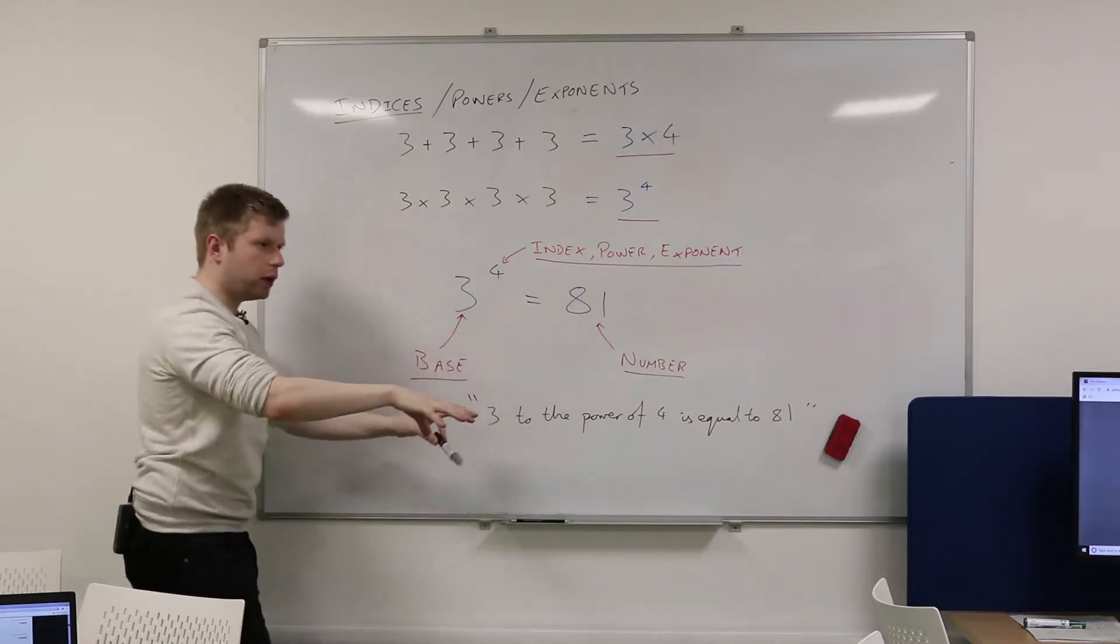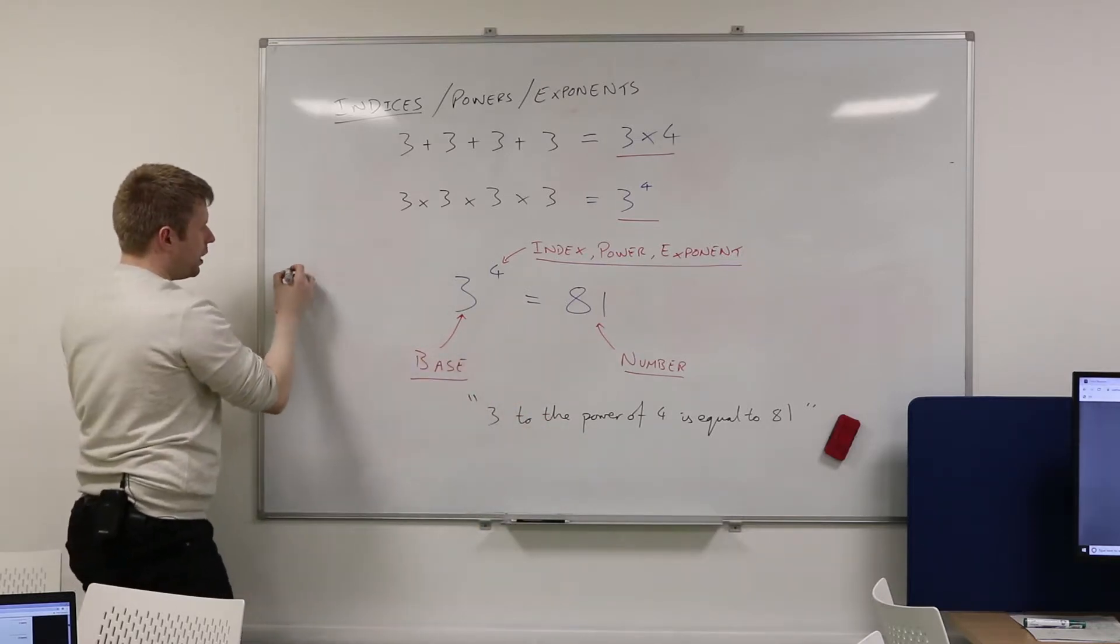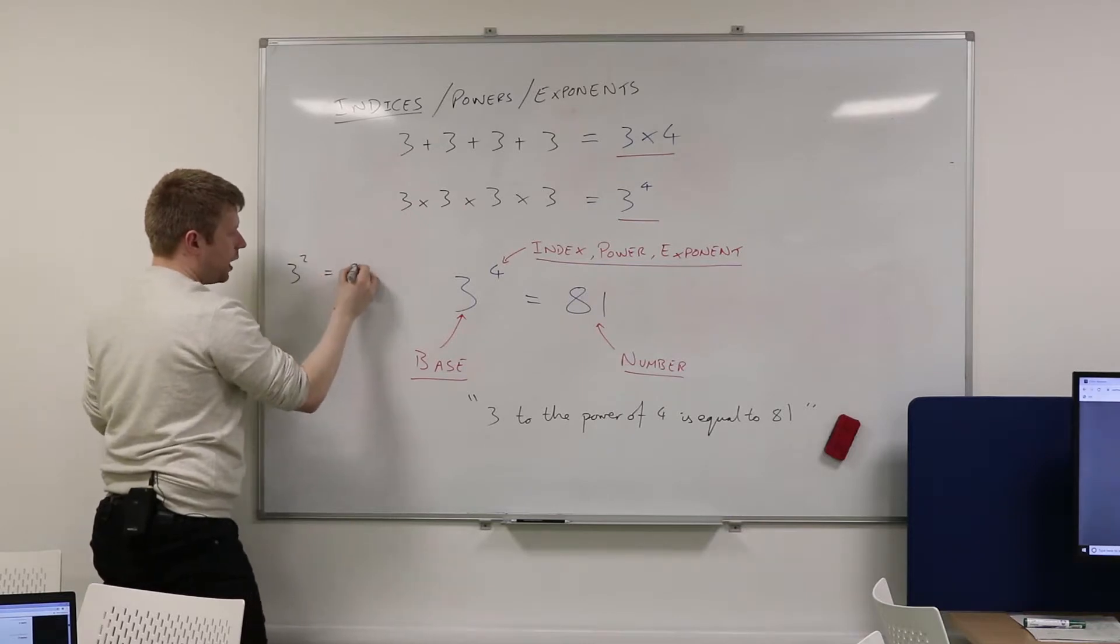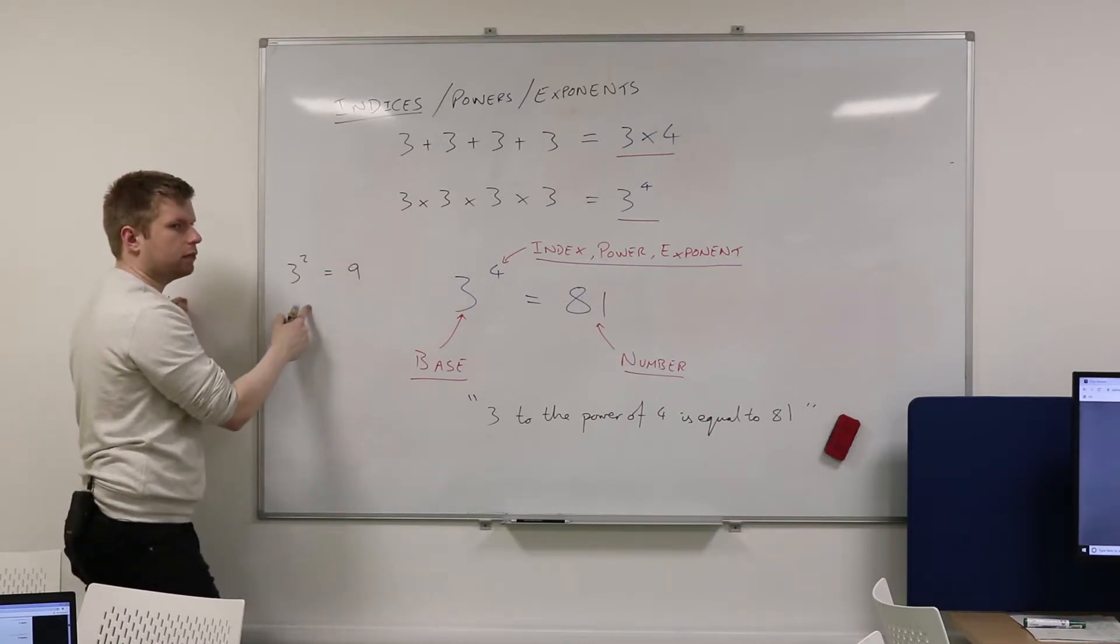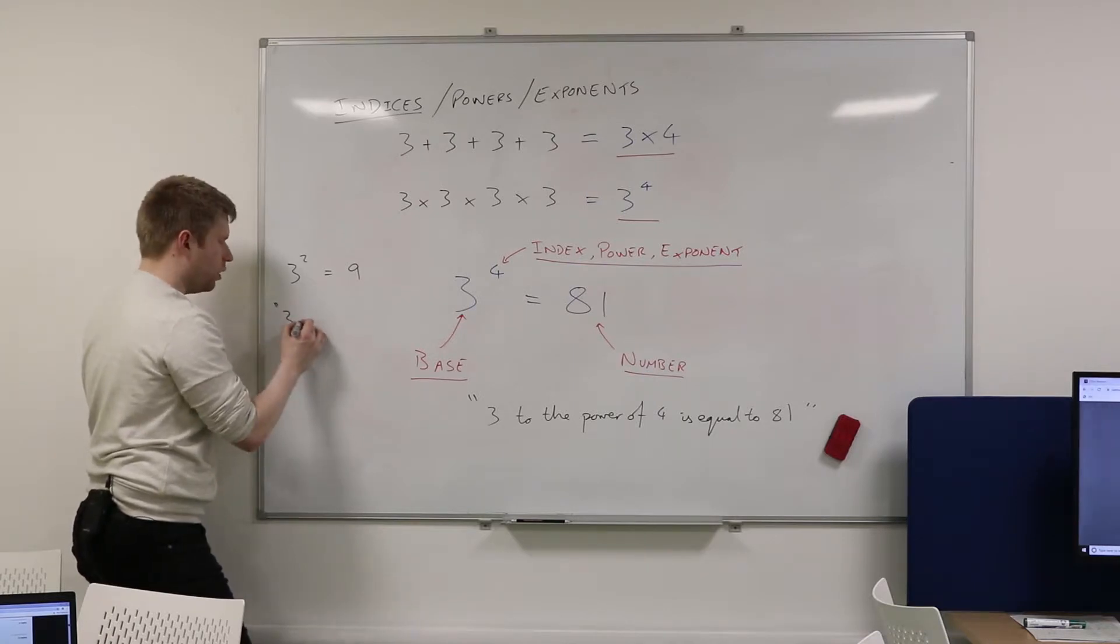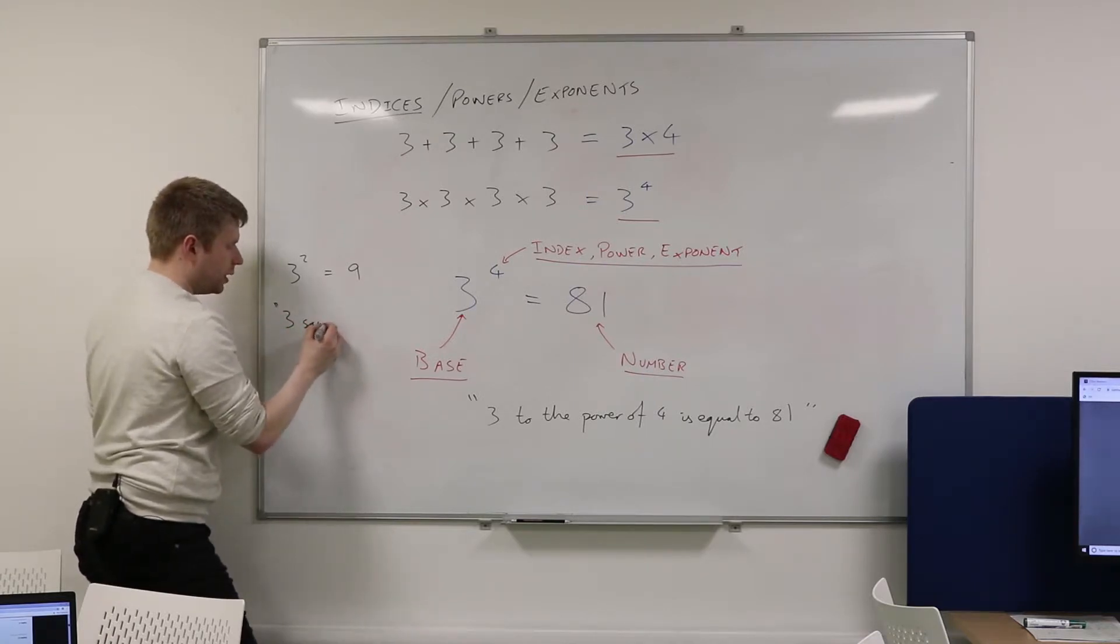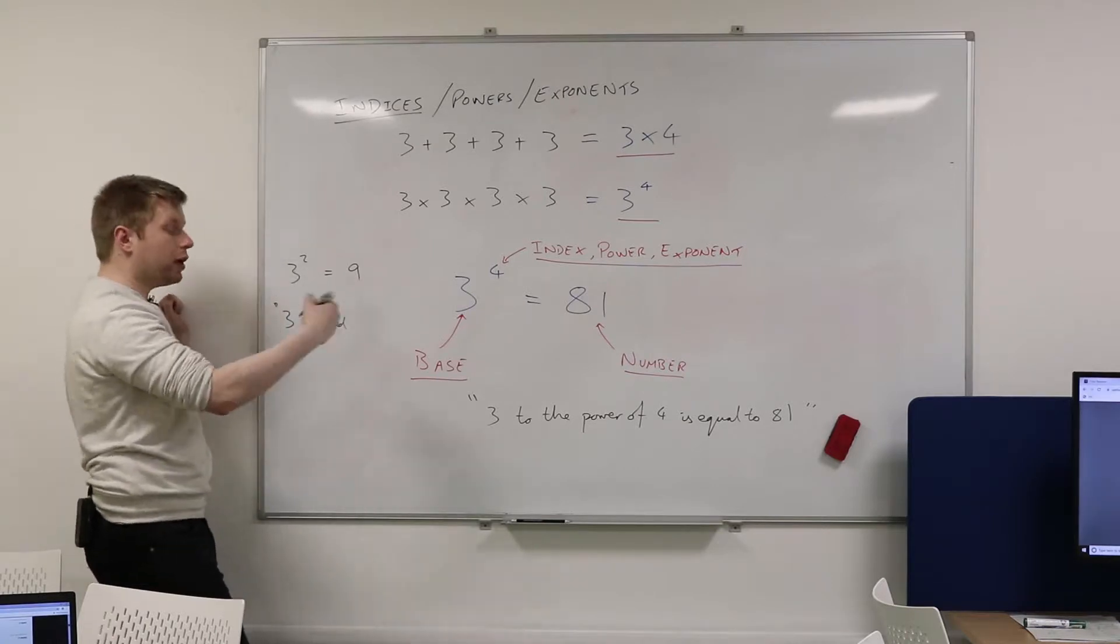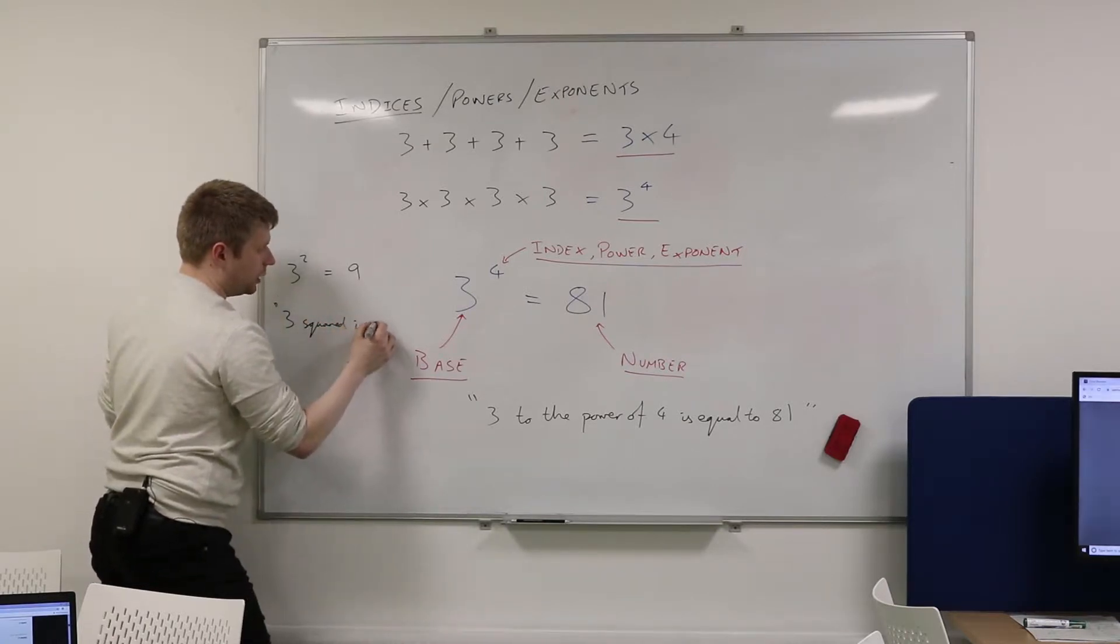So that's how we say that. Now, we kind of discussed this before when we were looking at thirds, but if I wrote this down, how would I say this? 3 squared. So, 3 squared.